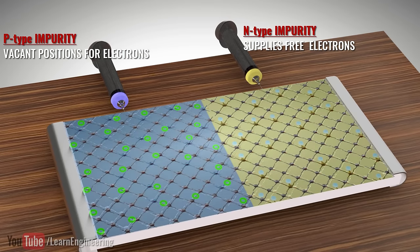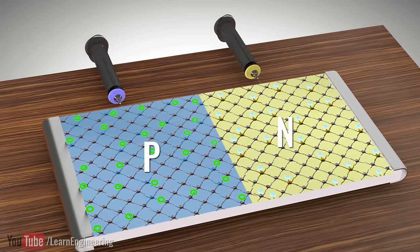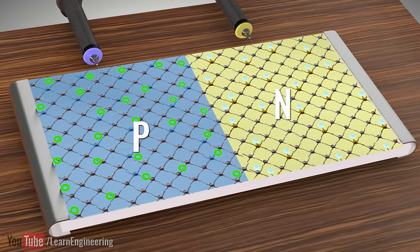So at the N side of the diode, we will have free electrons and at the P side, we will have vacant positions for electrons.